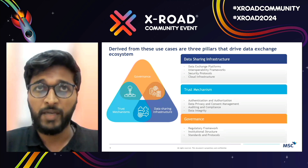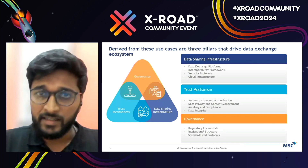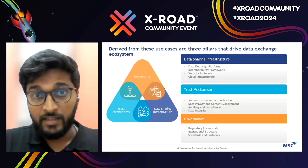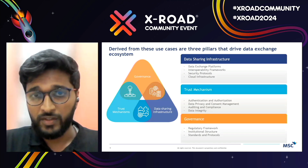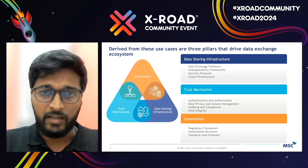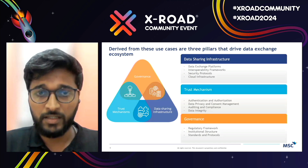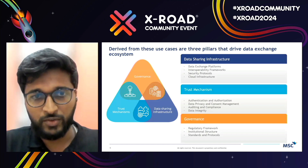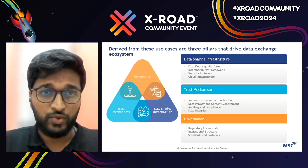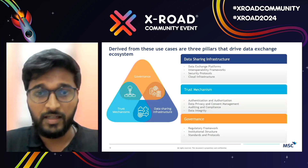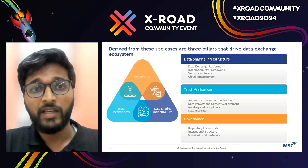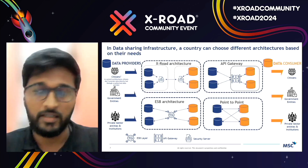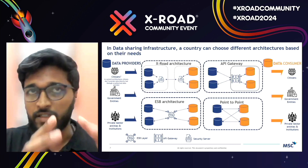Within each pillar there are important subcategories. Data sharing infrastructure requires data exchange platforms, interoperability frameworks, security protocols like PKI, and cloud infrastructure. The trust mechanism pillar requires authentication and authorization mechanisms like X.509 certificates, data privacy, consent management, auditing, and data integrity. The governance framework requires a regulatory framework like GDPR, a governing institution, and defined standards.